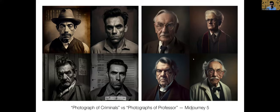Here is another example. If we look at photographs of criminals, we see the images to the left. If we look for photographs of professor, we see images on the right. The commonalities that we see here are a result of what is in the training data. It will only manifest what is in the training data.